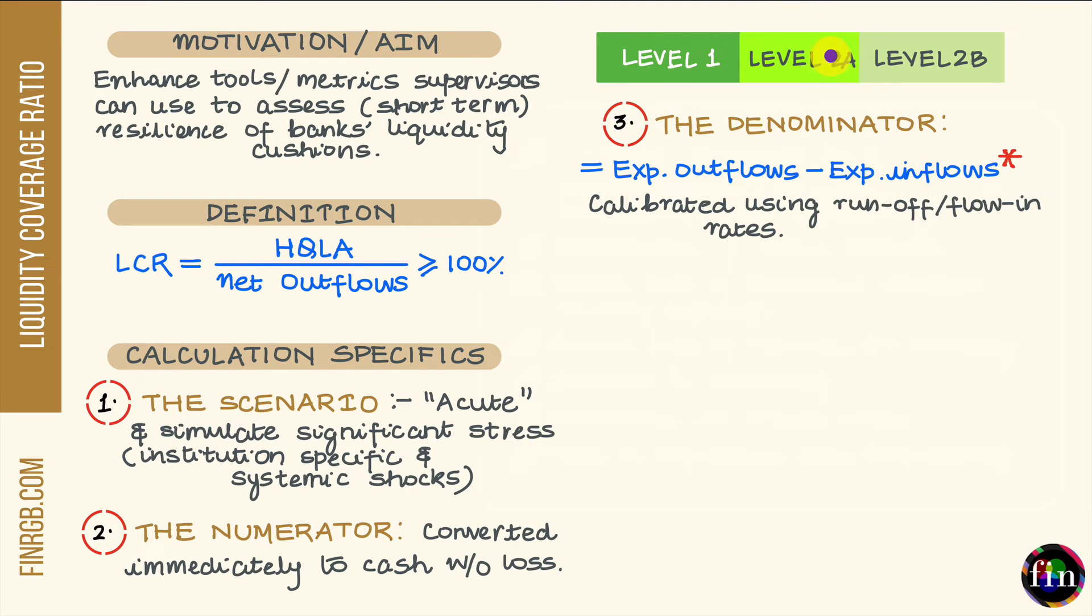Assets which go in the level two category are assigned a non-zero haircut. Level two assets are further subdivided into two categories: level two A and level two B. In level two A category, we would include assets such as government securities and highly rated corporate bonds with a rating of AA- or higher. The haircut for this category is 15%.